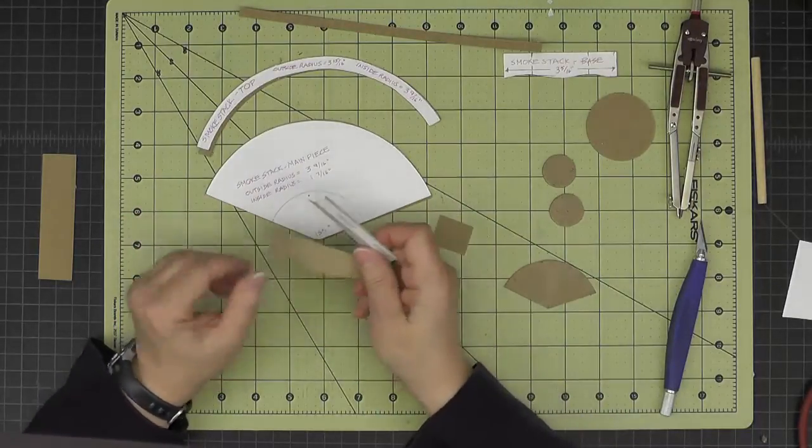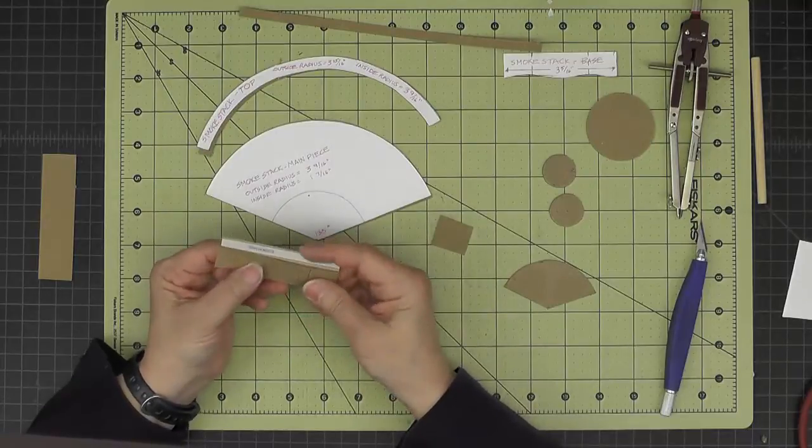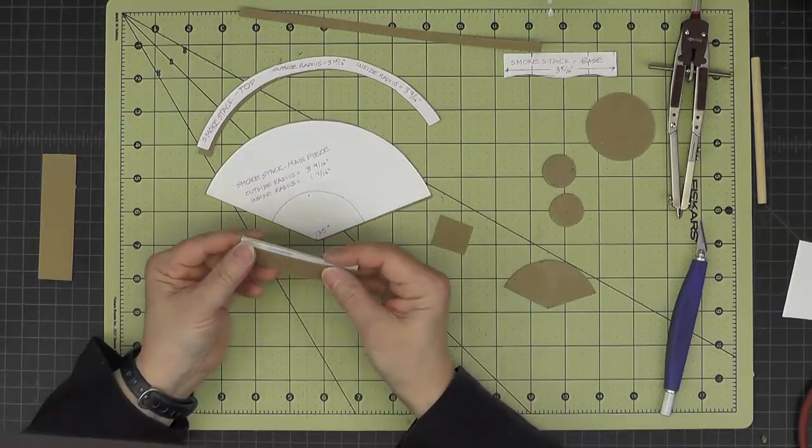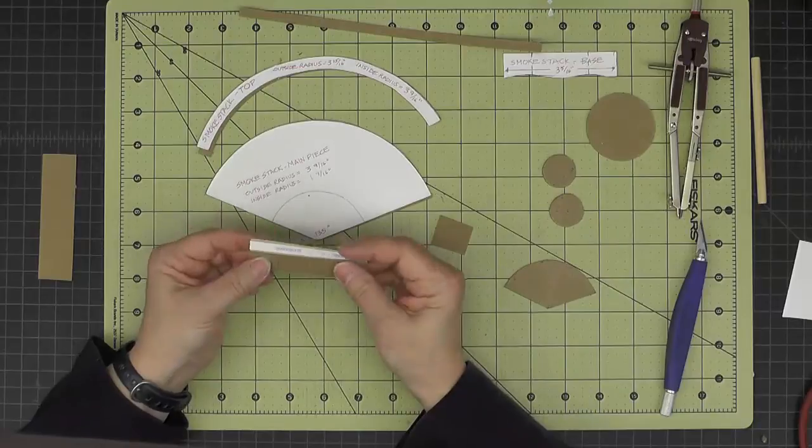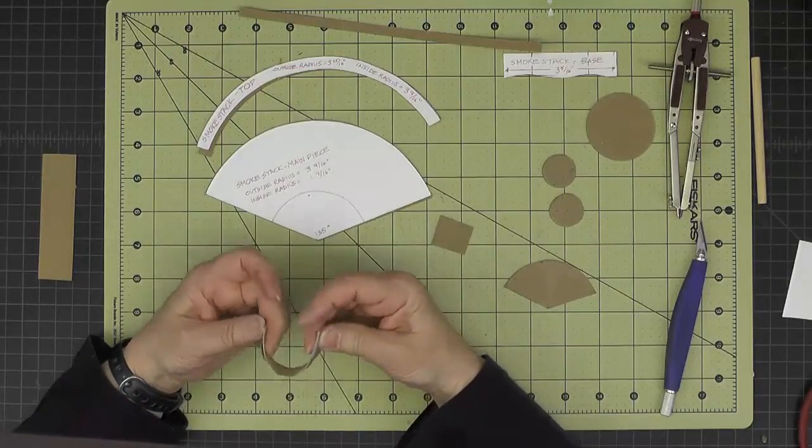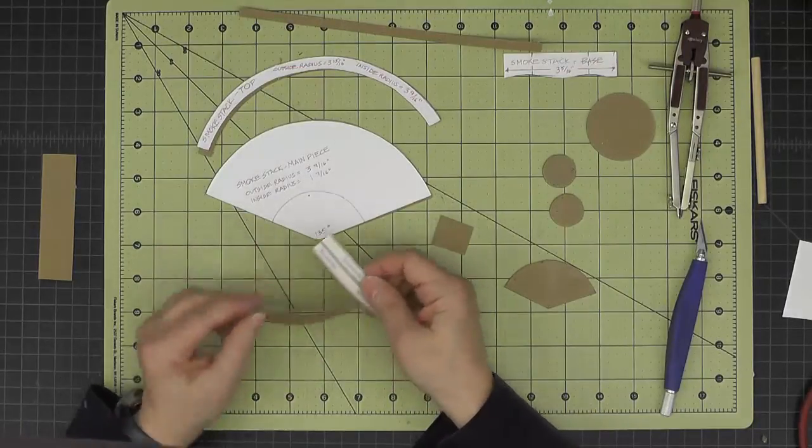So I can go ahead and permanently join it into a circle. But before I do that, I want to take a piece of cardstock joining strip and just attach that to the inside of the flat edge. So I'll do that.